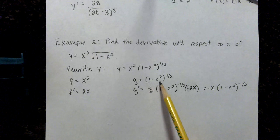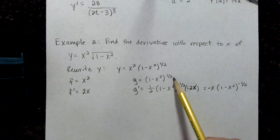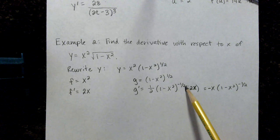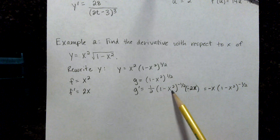My second function is 1 minus x squared to the 1 half power. I used the power rule and the chain rule here. 1 half times my function, I reduced the exponent by 1, and then I multiplied by the derivative of the inside function. So the derivative of 1 minus x squared was negative 2x.